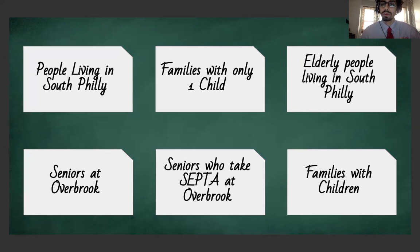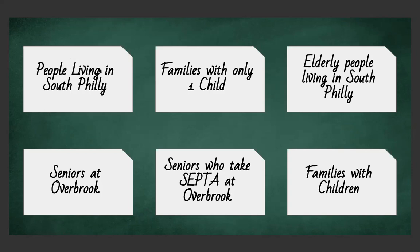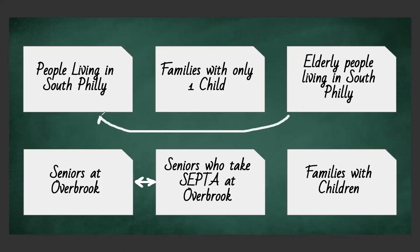This is going to be the demonstration slide. I want to look at all these little boxes and try to figure out what variables are connected to each other. One that sticks out to me is 'seniors at Overbrook' and 'seniors who take SEPTA at Overbrook' — these two items seem closely connected, so I'm going to draw an arrow between them. Another one would be 'people living in South Philly' and 'elderly people living in South Philly' — those two items are connected.